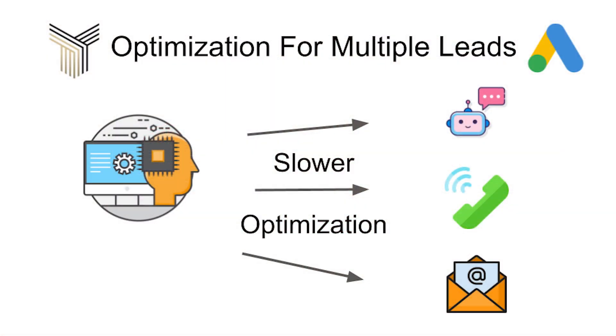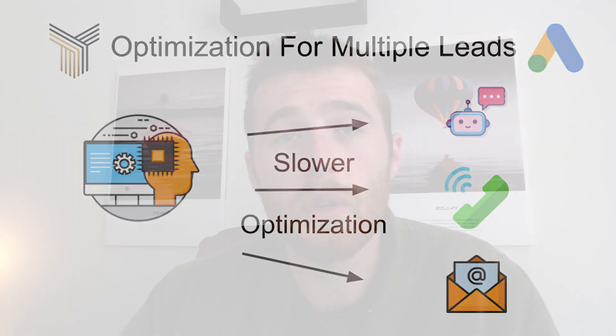They're like, just start running Google Ads, we'll figure that out later. No — you need to decide this now. Because if you have 20 different goals in Google Ads — email lead submissions, phone calls, chatbot, page views, all these different conversion actions — Google Ads is going to take forever to optimize and you are going to see some very poor results. It's very important to focus on what you want to achieve before launching your campaign.